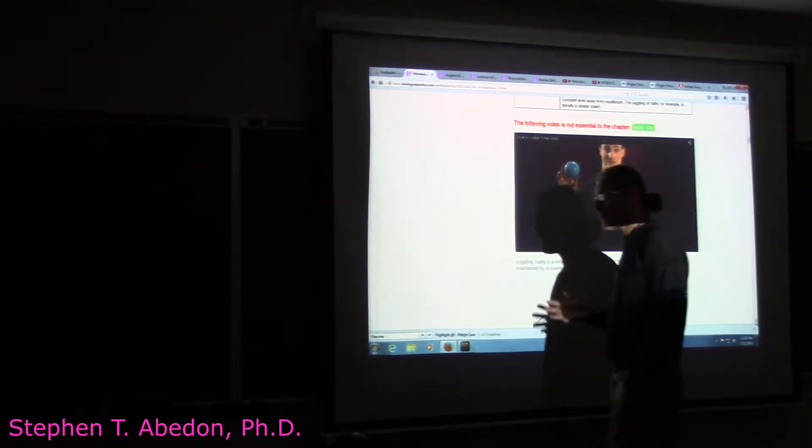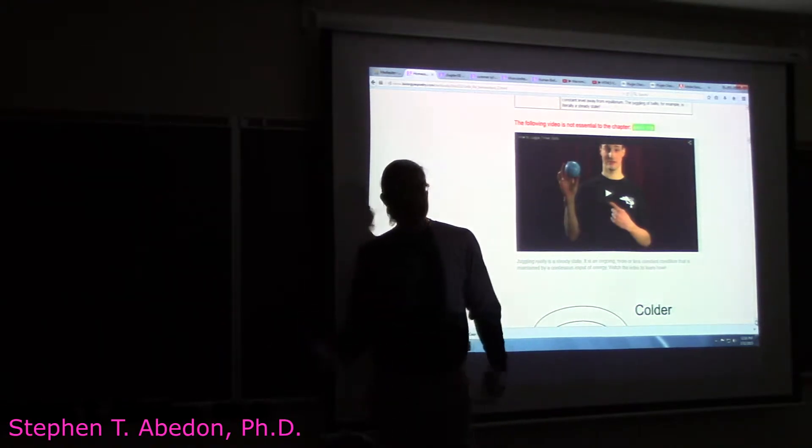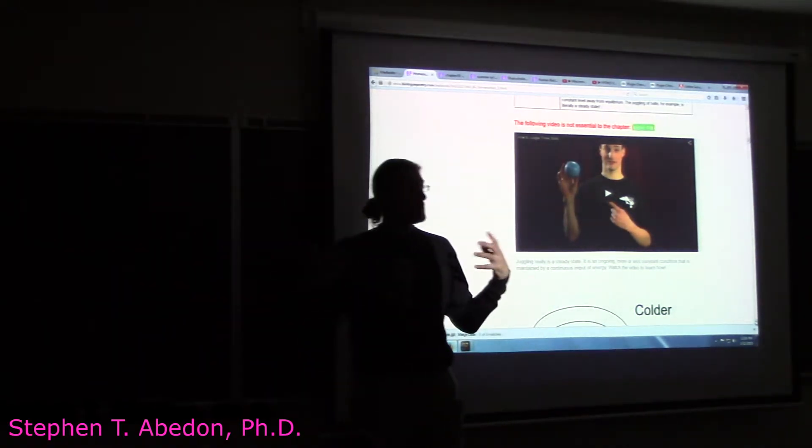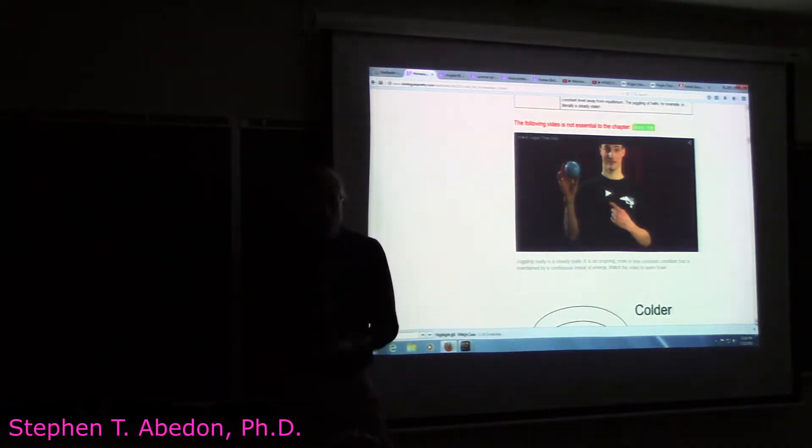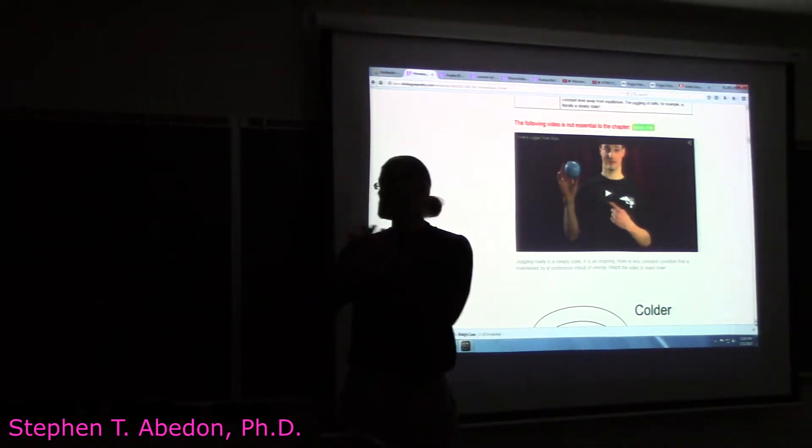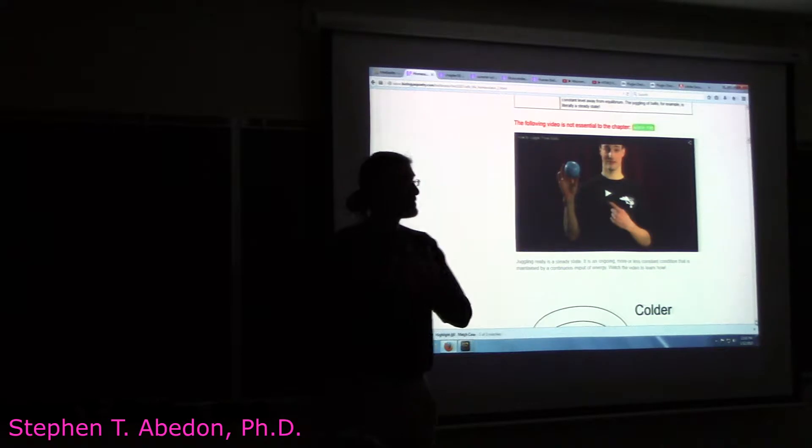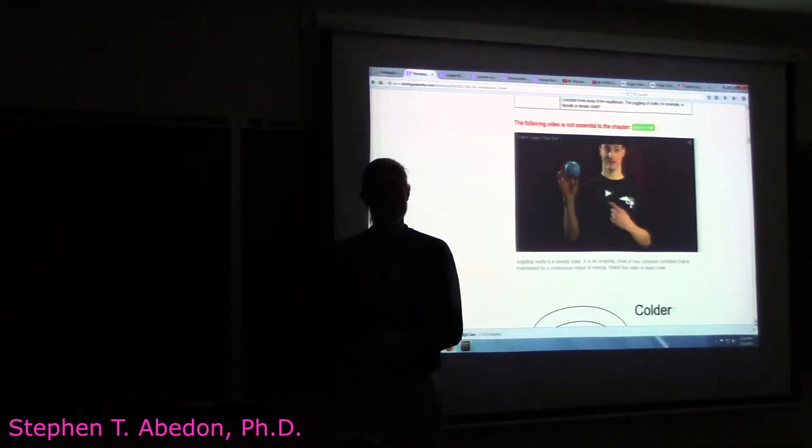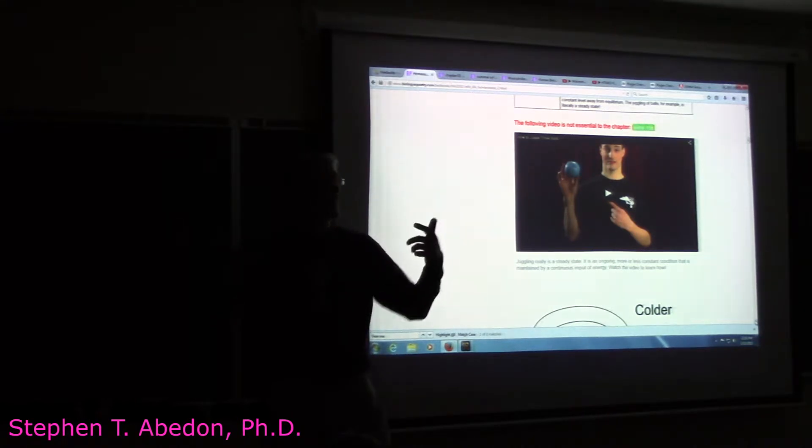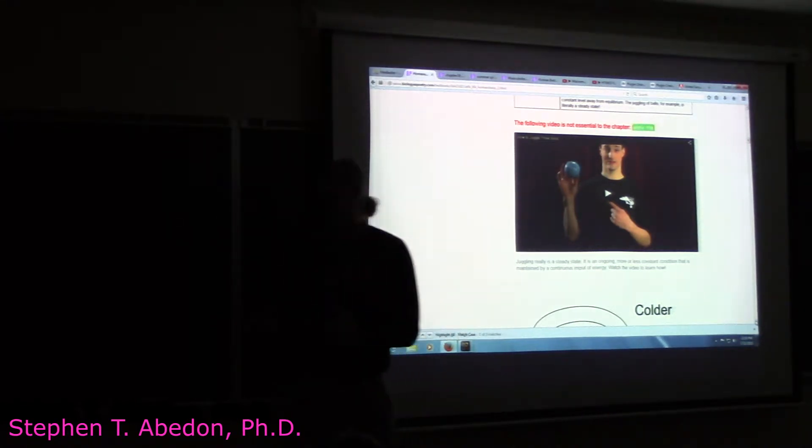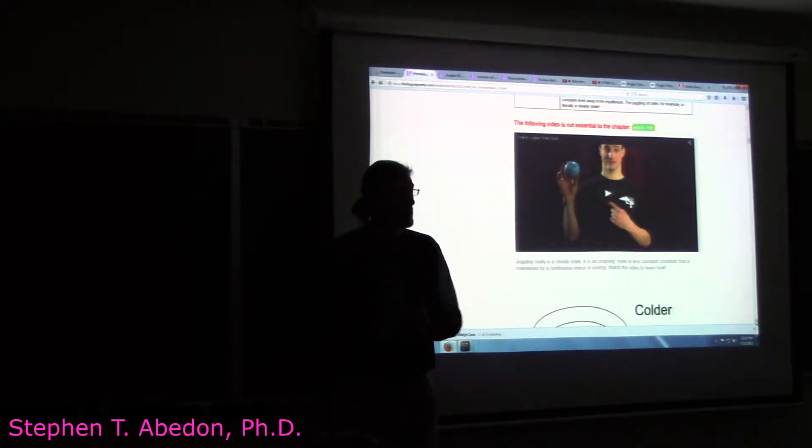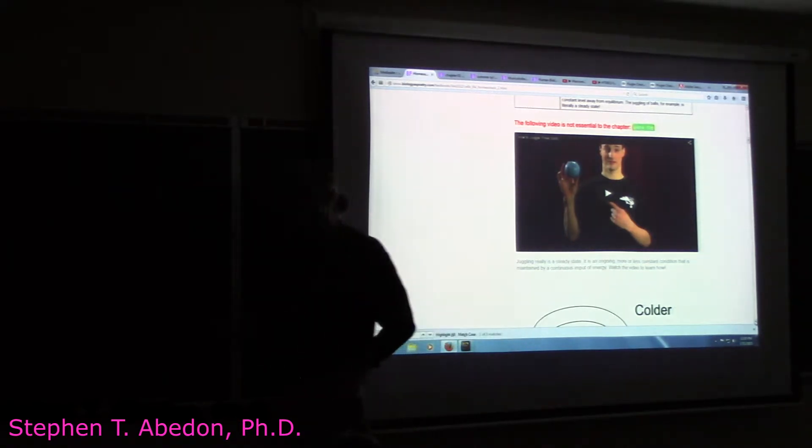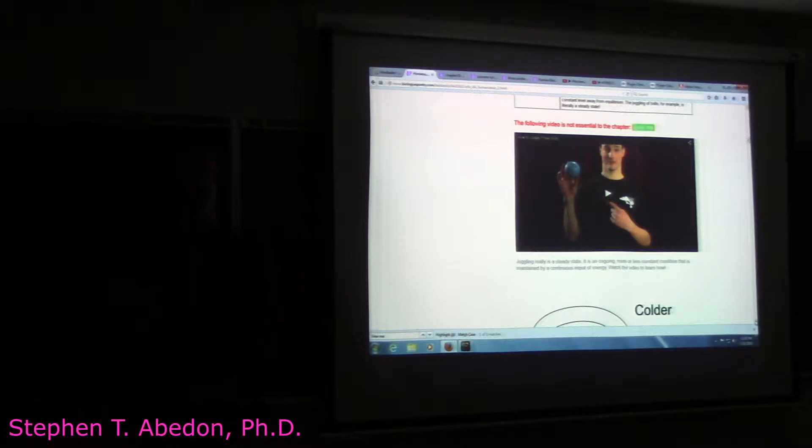If you think about what an organism is, an organism takes in energy from the environment and other things, and it uses that energy in order to grow, and it uses that energy in order to reproduce, and it uses that energy in order to maintain itself. Maintaining itself is the homeostasis part. So it's constantly taking in energy, and it's using that energy in order to keep its internal physiology more or less sustained, maintain homeostasis. And that's called a steady state.